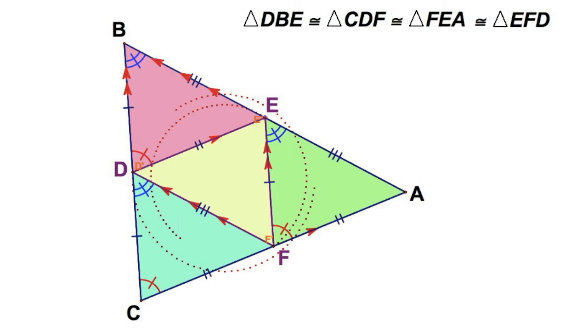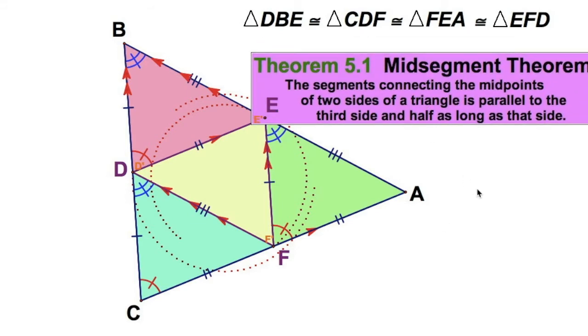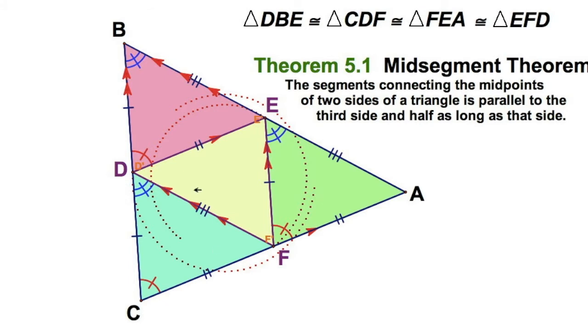So DE is congruent to CF is congruent to FA by corresponding parts of congruent triangles. EF is congruent to BD is congruent to DC. Therefore, I've got a fourth congruent triangle, which is a 180 degree rotation. It's a 180 degree rotation of the other ones. That's kind of cool. So now, let's go back to, let's put our theorem back up there. Because our theorem, remember what we were trying to demonstrate. We can see that DE is parallel to CA. But now we can see where the one-half comes in. If all these triangles are congruent, and DE is congruent to CF and AF, that means DE is exactly one-half of CA. Or, I could say CA is twice DE. Pretty interesting.